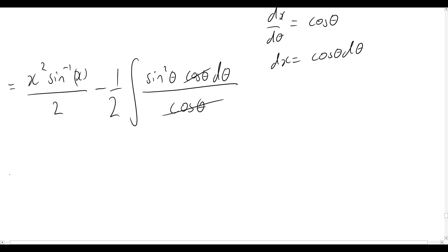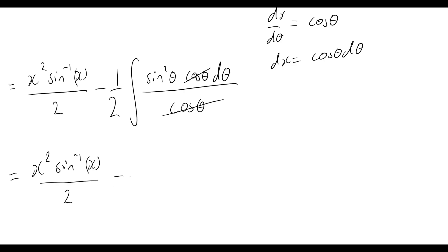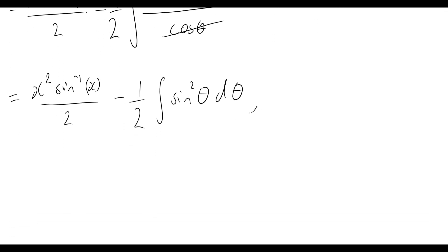Our problem now looks quite a bit nicer: x squared sine inverse x over two, minus one half times the integral of sine squared theta dθ. Now we refer back to trigonometric identities and use the fact that sine squared theta can be rewritten as one half minus one half cos(2θ).